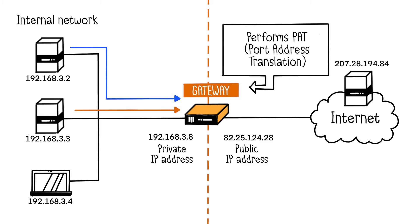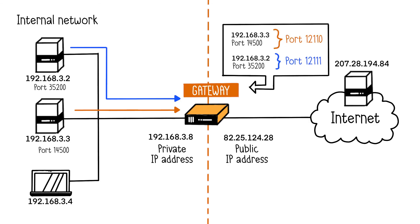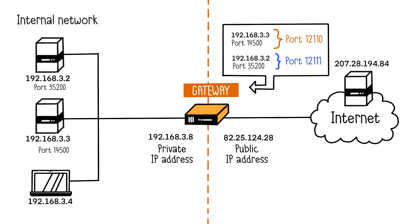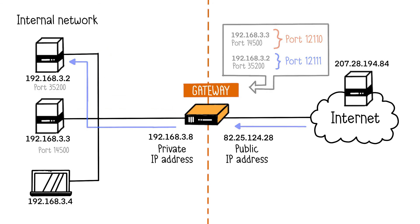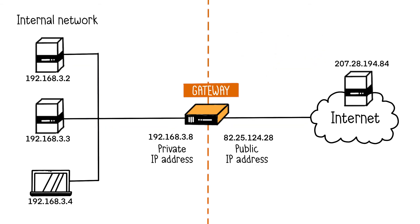The gateway dynamically associates the requester's private IP with a port number. For instance, for the first client, the gateway might assign port 2110 instead of the initial port 14500. This way, responses sent to the public IP on port 2110 will be redirected to the first client, shown in orange. The same mechanism applies for the second client with a different port, here 1211 in blue. PAT allows numerous machines to communicate using a single public IP, playing on source ports.